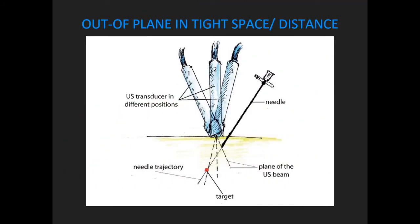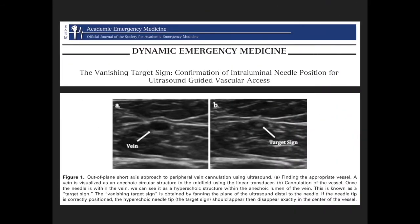In tight spaces where there is not much room to maneuver, tilting of the probe can be done to track the tip of the needle. The vanishing target sign confirms intraluminal needle position. In the out-of-plane approach, the tip of the needle seen as a hyperechoic structure should be seen throughout cannulation. Once in the vessel, the vanishing target sign is obtained by fanning the ultrasound distal to the needle — if correctly positioned, the hyperechoic needle tip should appear then disappear exactly in the center of the vessel.